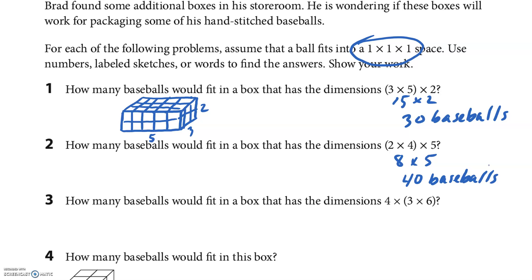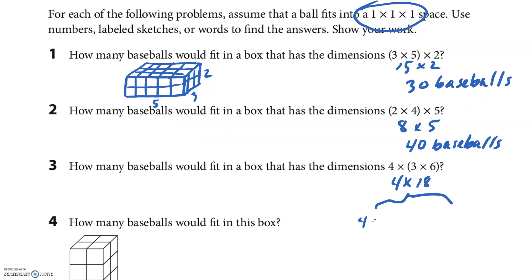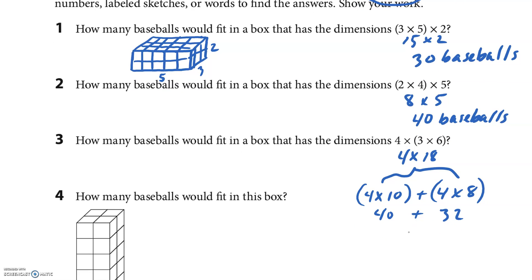I'm going to do the parentheses first. I have 4 times 18. I'm going to break this into 4 times 10 and I'm going to add to that 4 times 8. That's 40 plus, because I know my 4 times 8 is 32, so I believe that is 72. I'm going to put up here 72 baseballs.